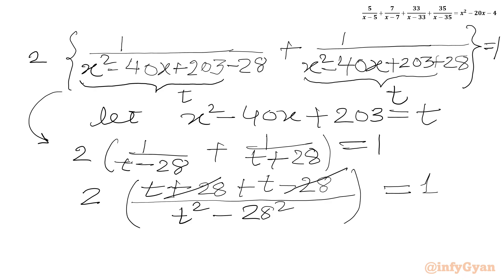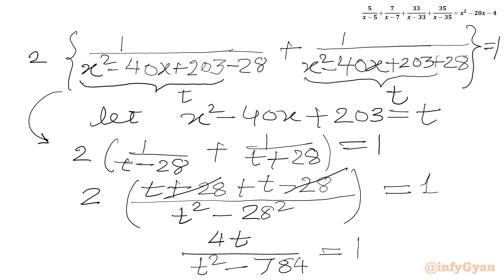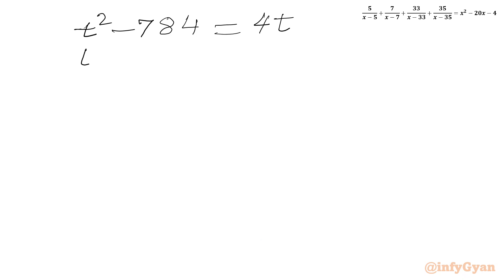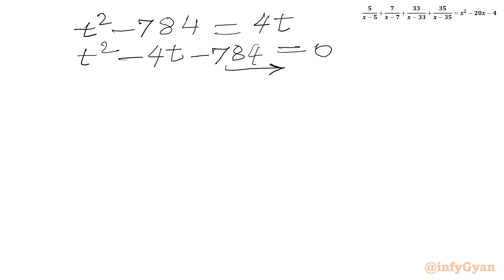The plus 28 and minus 28 cancel in the numerator, leaving t plus t which is 2t, times 2 gives 4t. So we have 4t over (t squared minus 784) equals 1. Now we cross-multiply: t squared minus 784 equals 4t, giving t squared minus 4t minus 784 equals 0.